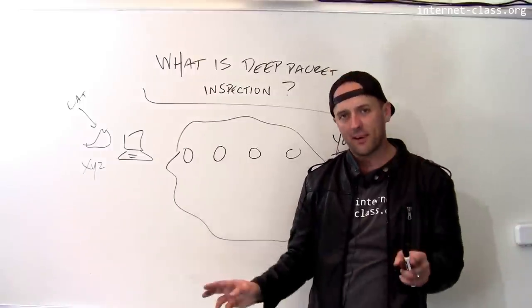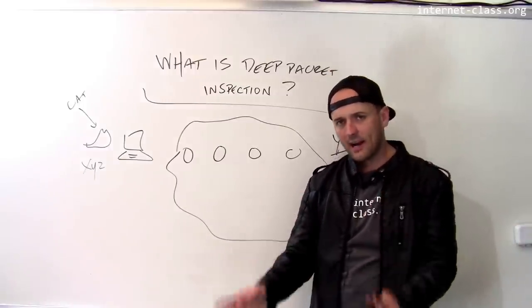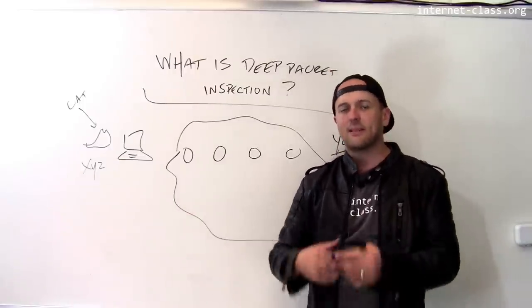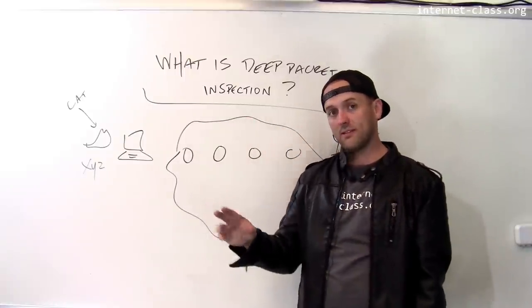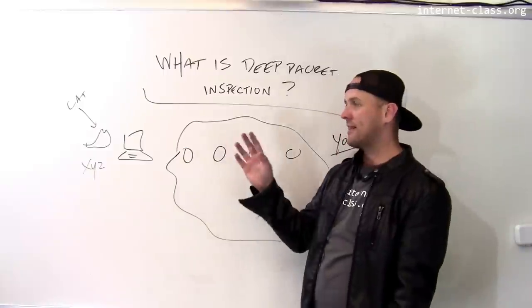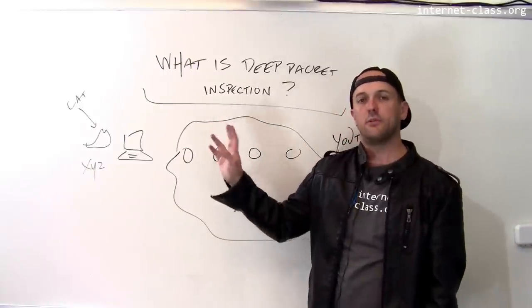Once they start making these complex policy decisions based on the contents of the message, they have to unpack things, they have to look at a lot more data, and they get a lot slower. And so to some degree, performance constraints have caused a lot of people to not run routers that do this.